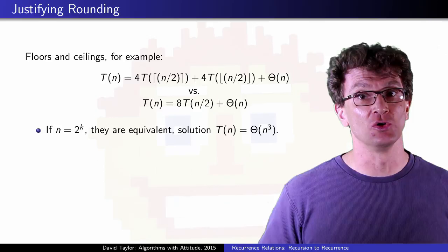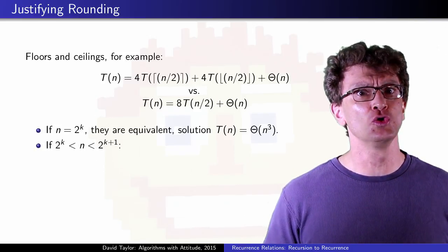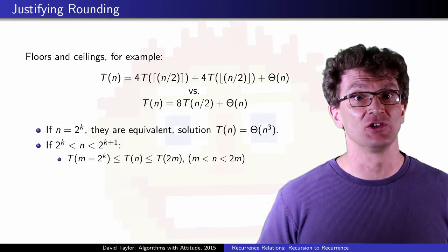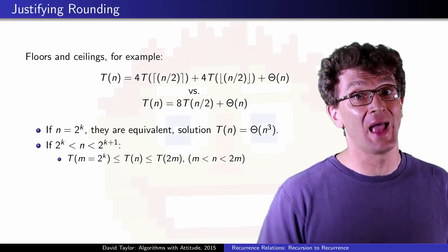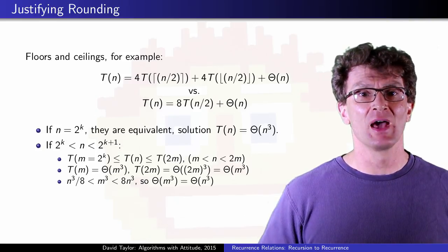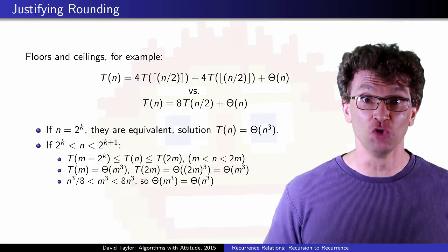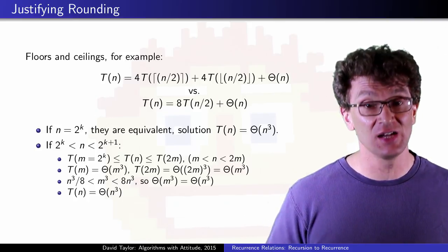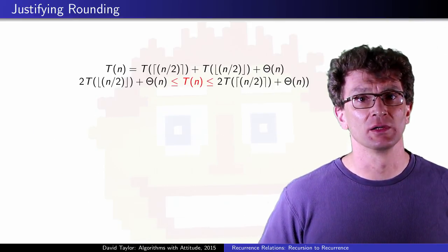Well, if n isn't a power of 2, imagine solving it for the two surrounding perfect powers of 2. It turns out each of these functions, both the one that is too big and the one that is too small, they both grow like n³. And if T is between two functions, each of which grows like Θ(n³), then T is Θ(n³).